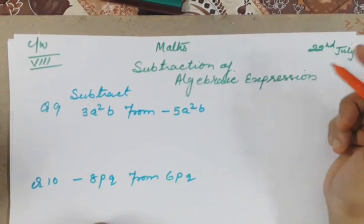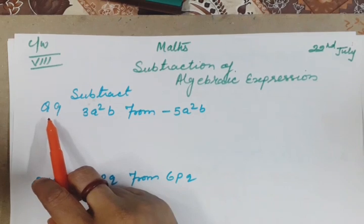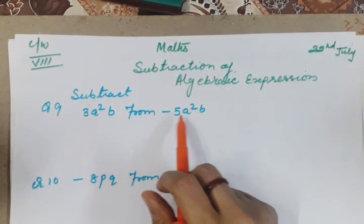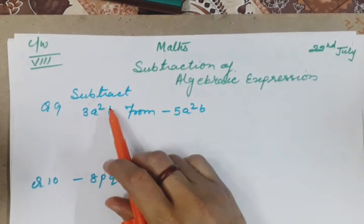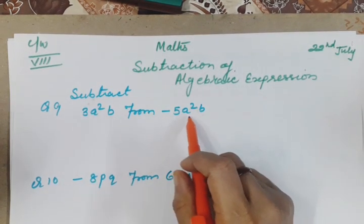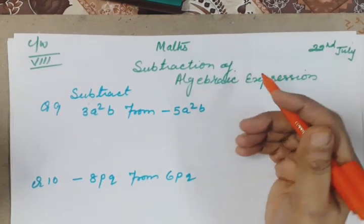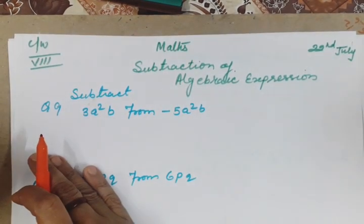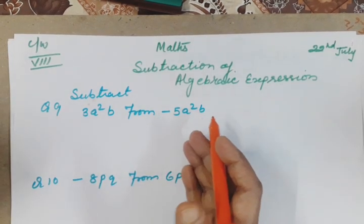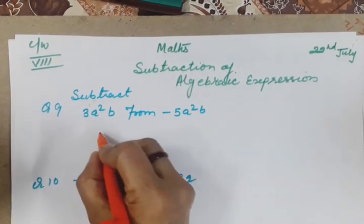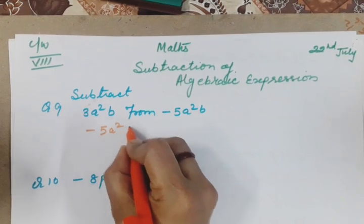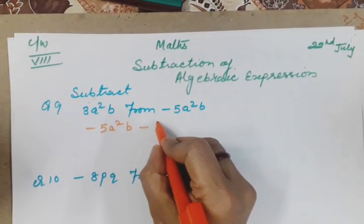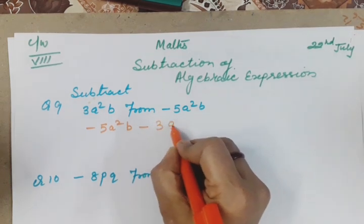Question number nine says subtract 3a²b from -5a²b. That means 3a²b ko -5a²b se minus karna hai. From ke baad wali value we will write first, so we will write -5a²b. Now because we have to do subtraction, put minus sign. Which number to subtract? 3a²b.